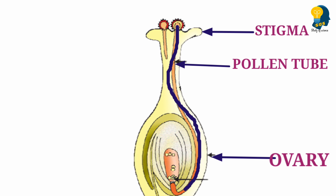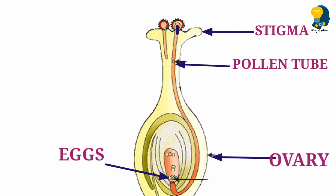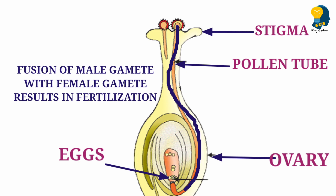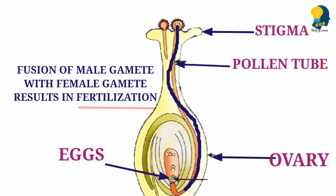Now, what does the ovary contain? It contains the female gametes, which are also called eggs. As the pollen fuses with the egg — the pollen which gets transferred through the pollen tube reaches the ovary where there are eggs — the male gamete reaches the female gamete. As a result of this, fertilization takes place. Fertilization is the result of the fusion of the male and female gamete.